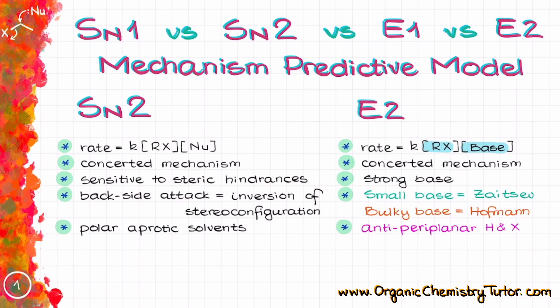We are going to separate our bases into two distinct categories. We have small bases that typically give Zaitsev product, and we have bulky bases that typically give the Hoffman product. In other words, the Zaitsev product is the more substituted double bond, the more substituted alkene, while the bulky bases give you Hoffman product, which is the less substituted alkene or less substituted double bond.